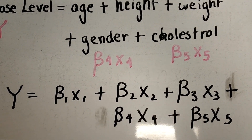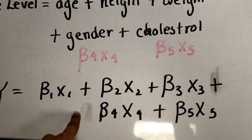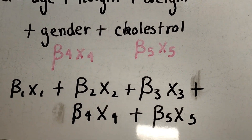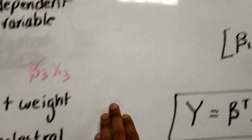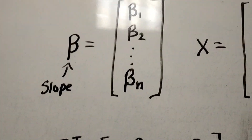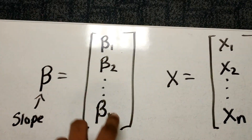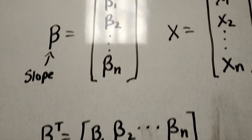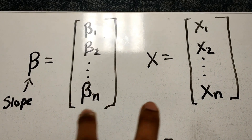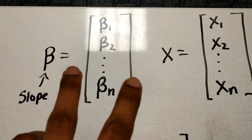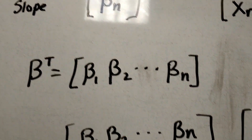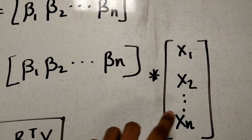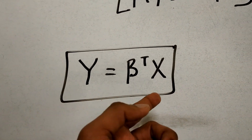What if we have about a thousand x values? We're not going to write it out as beta1*x1 plus beta2*x2 up to 1000. We need to make it more concise, so let's write this in a matrix format. We can replace all that with our beta — beta being a matrix from beta1 to beta-n, and x being x1 to xn. We can't multiply these two matrices in this format, so we need to take the transpose of the beta matrix. The result would be beta transpose times x, so y equals beta transpose x.